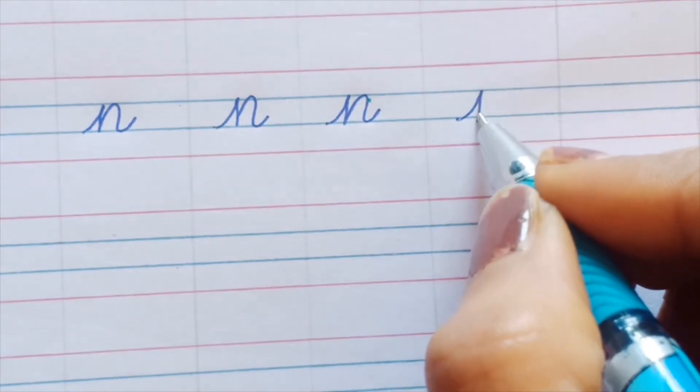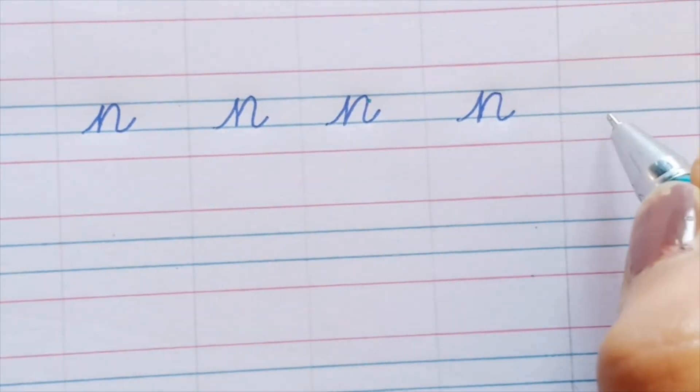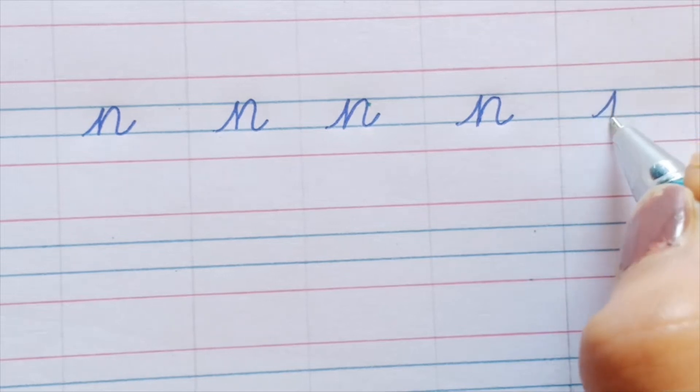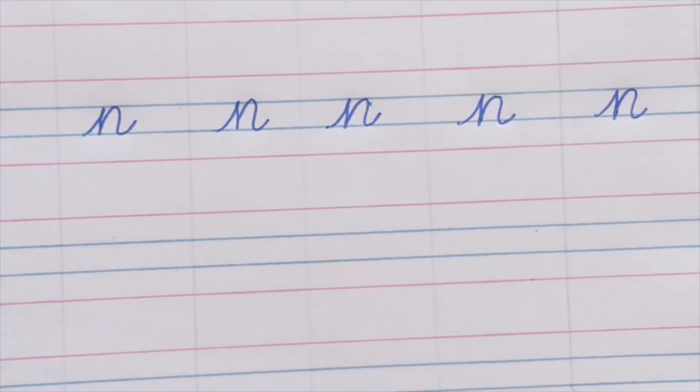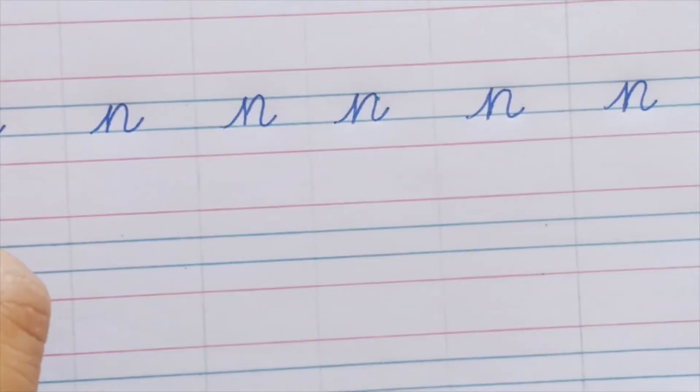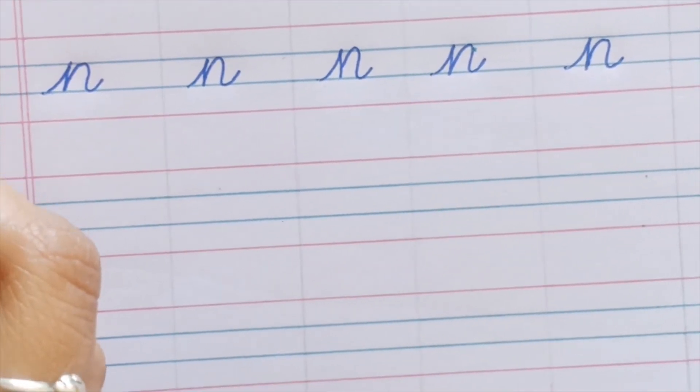First, second, third and fourth. This is our small 'n'. I have written it in one line but you have to write it on a full page.